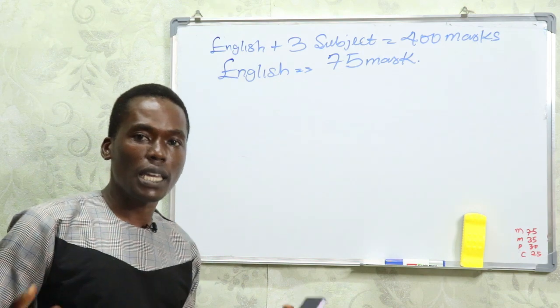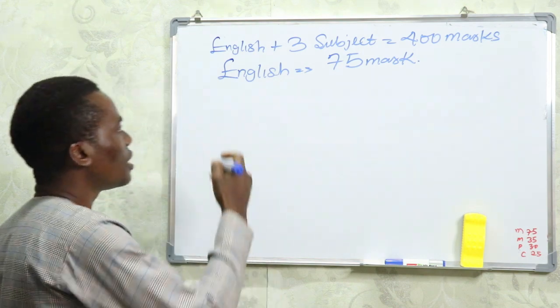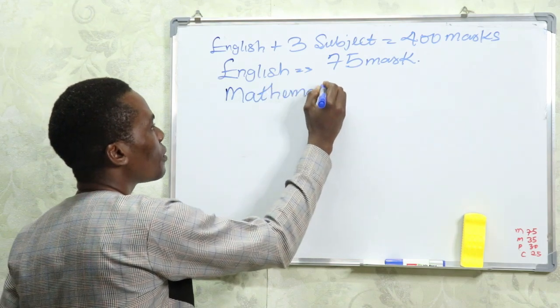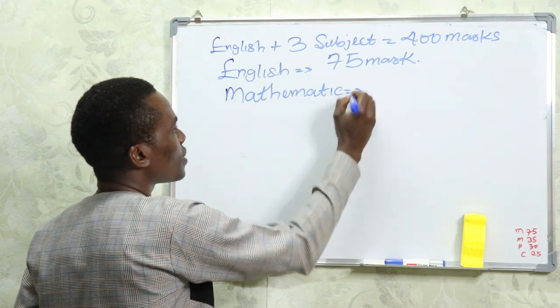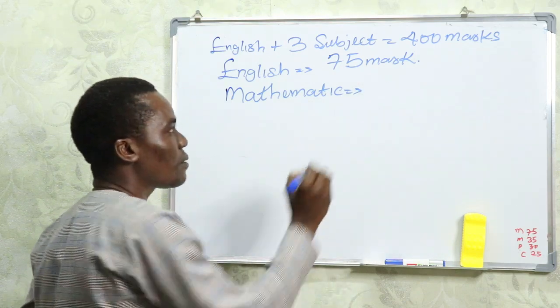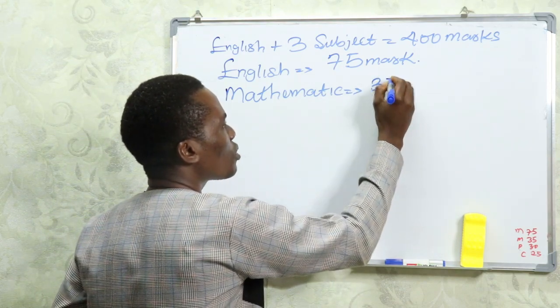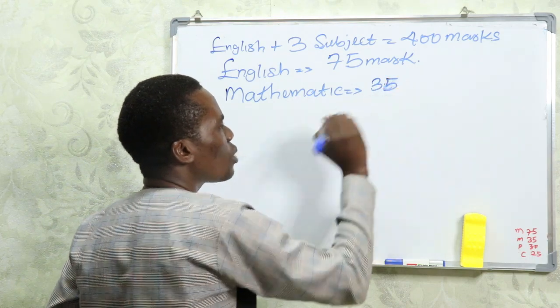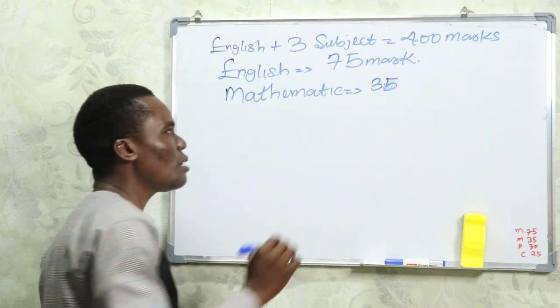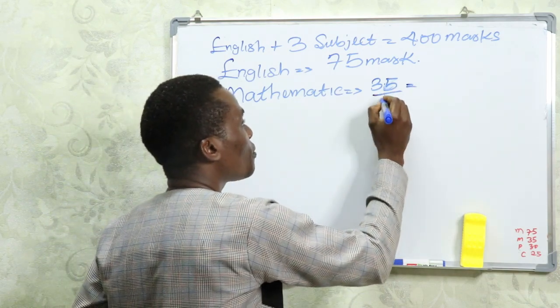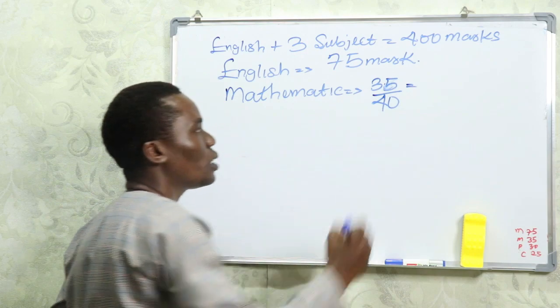I'm taking the other three subject combination: maths, physics and chemistry. Now in my mathematics, I should look forward to scoring just a 35. I want to get just a 35 mark. I want to get 35 questions correct. I want to answer 35 questions correct. Now if I calculate them, how many marks will I get?